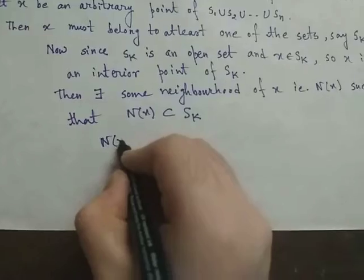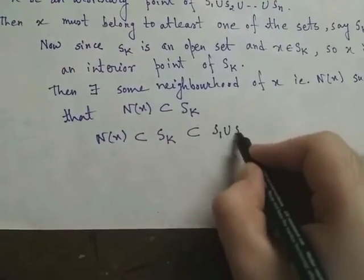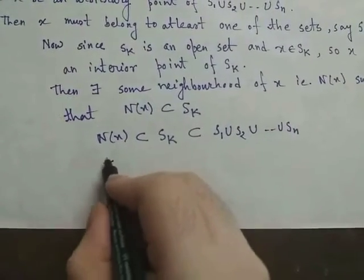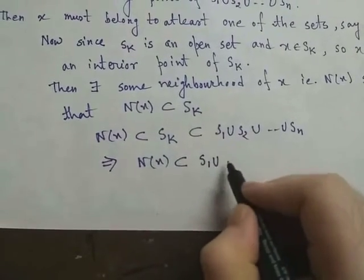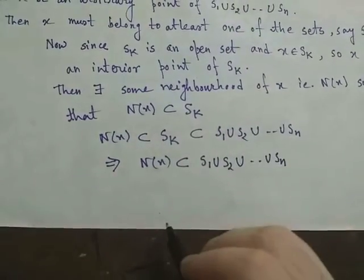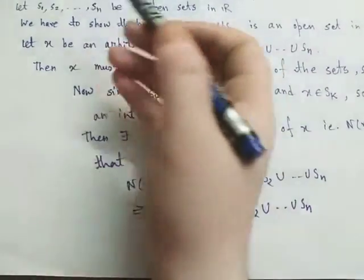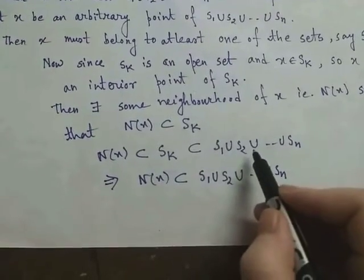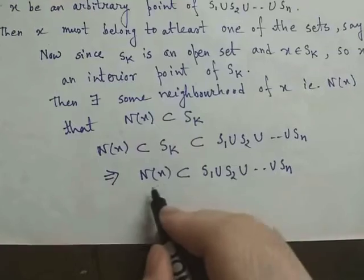Now, Nx is contained in Sk, and Sk is contained in S1 union S2 union ... union Sn, because Sk is either S1 or S2 or S3 or ... or Sn. So obviously Sk is contained in S1 union S2 union ... union Sn, and this shows that Nx is contained in S1 union S2 union ... union Sn.